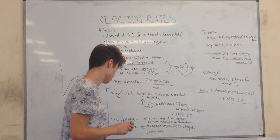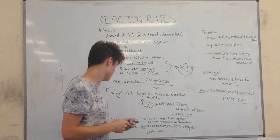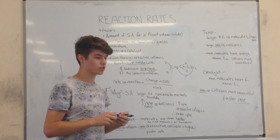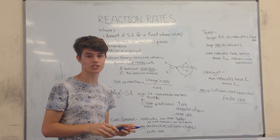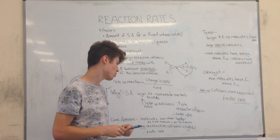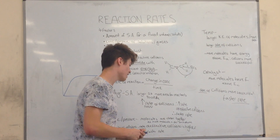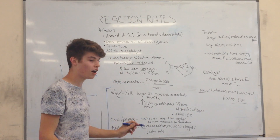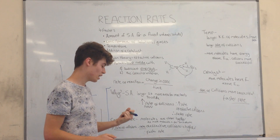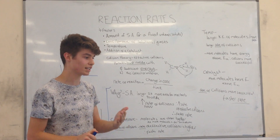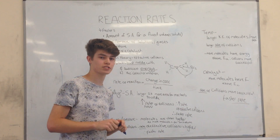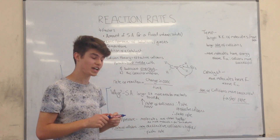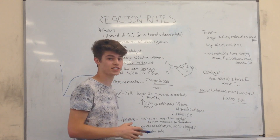The second factor was the concentration or pressure of solutions and gases. When we refer to concentration or pressure, we're talking about the number of molecules per unit volume — for example, the number of molecules in one centimeter cubed. The higher the concentration or pressure, the molecules will be closer together as there will be more molecules per unit volume. As a result, there will be a higher rate of collisions — because if you were to imagine yourself walking through a crowded area, you're more likely to collide with someone else than if you were walking through a very empty area. And if there's a higher rate of collisions, there's going to be a higher rate of effective collisions, and therefore a faster rate.